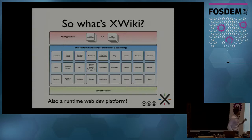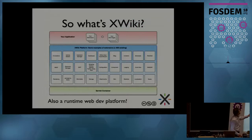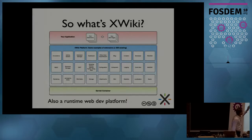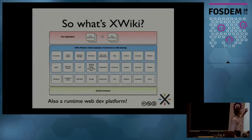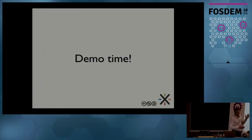It's also a runtime web development platform. It runs on a Java servlet container, and it provides a lot of features — a lot of APIs and UIs in various domains: annotation, dashboard, blog, and more. There are over 700 extensions. But what's important is that you are actually able, inside wiki pages, to put some scripts and call those APIs, or call any of the APIs that exist, to create your own application.